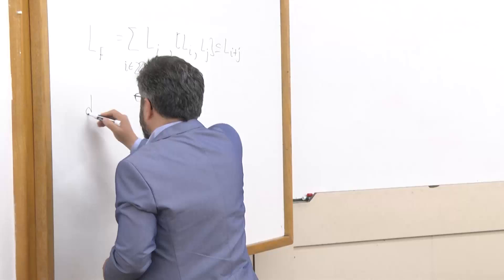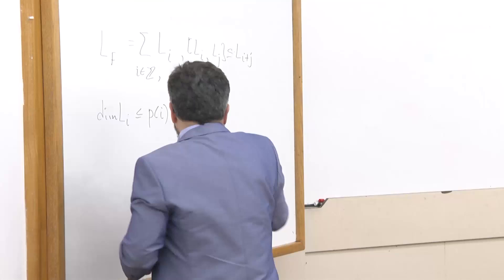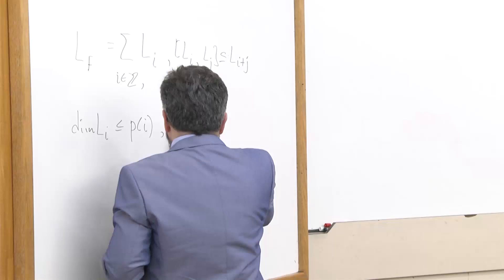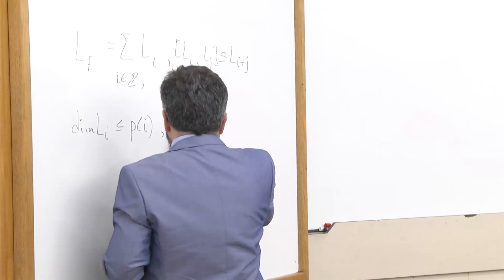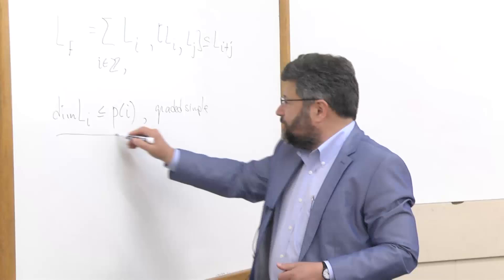Suppose that all components are finite dimensional, and moreover, their dimensions grow polynomially — bounded above by a certain polynomial in I. What can we say about such objects? If you want a classification, then it is natural to assume that they are graded simple. Graded simple means they are allowed to contain ideals, but not graded ideals other than zero and the whole algebra.